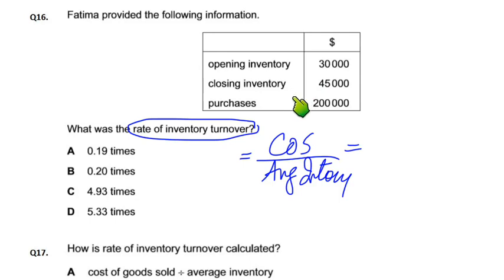To opening mein purchase add karo aur closing minus karo to cost of sales aayega. 30 mein plus karo 2 lakh, 230 ho gaya. 230 mein se minus karo 45 — 230 minus 45 — yeh 185 aa gaya aapke paas cost of sales.